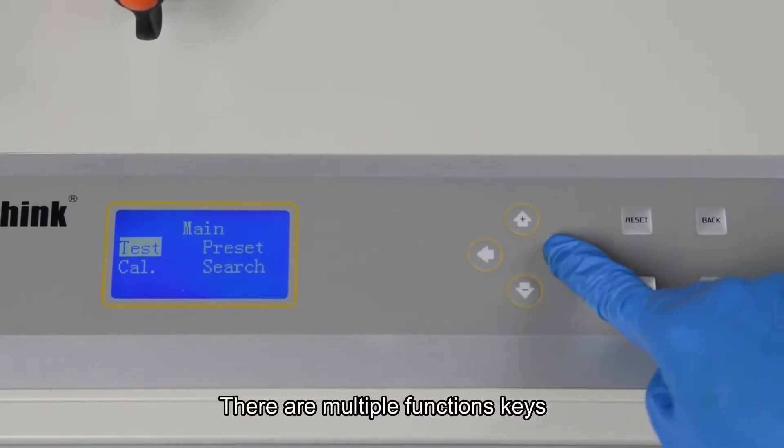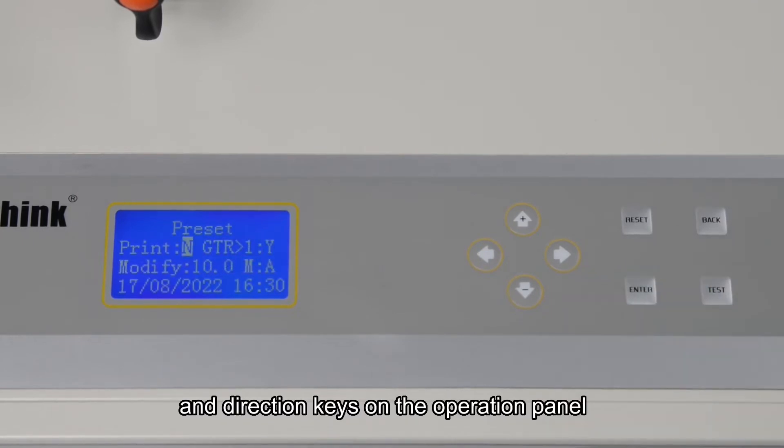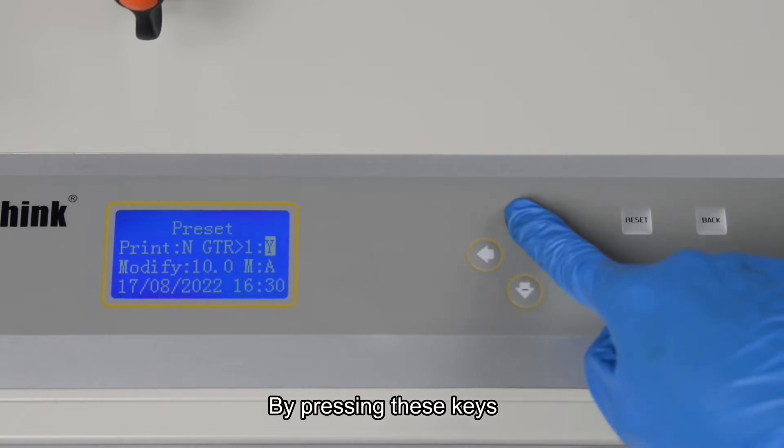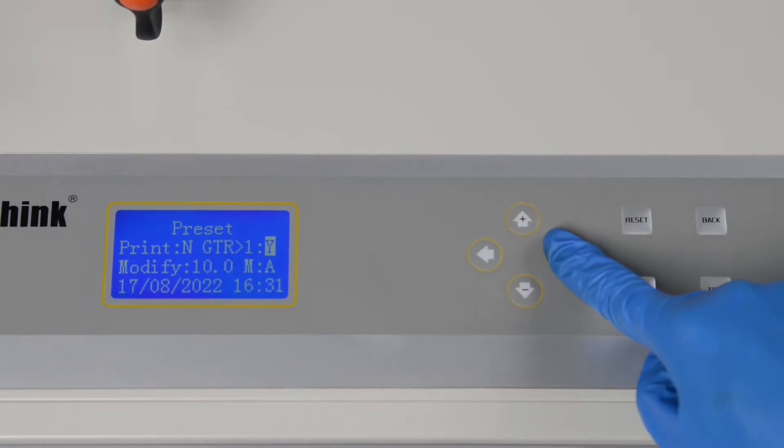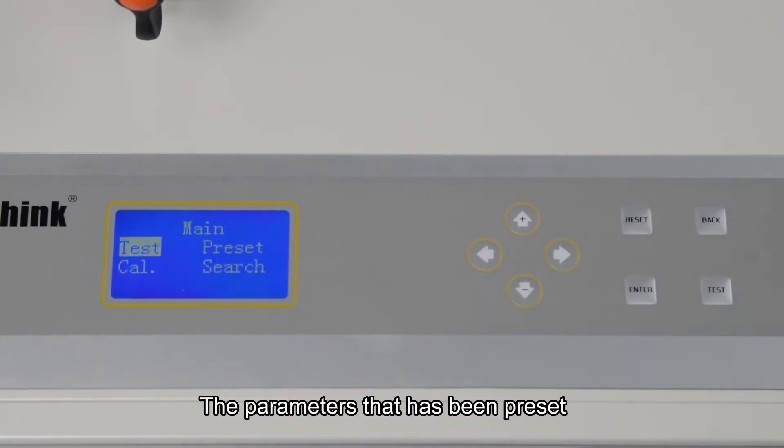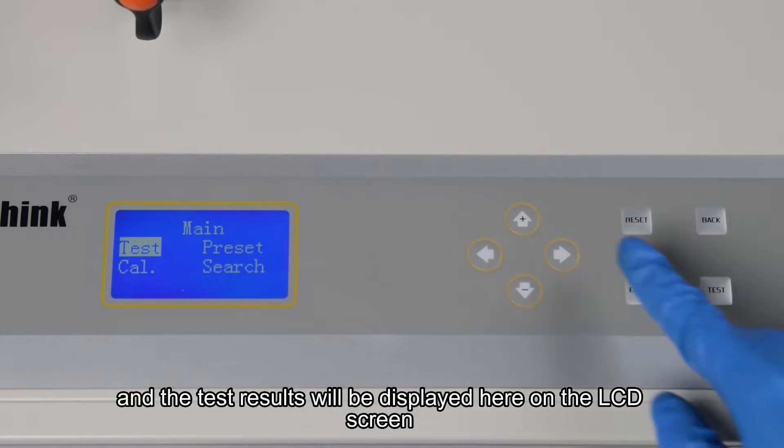There are multiple function keys and direction keys on the operation panel. By pressing these keys, we can start or stop the test, preset the parameters, conduct calibration, and so on. The parameters that have been preset and the test results will be displayed here on the LCD screen.